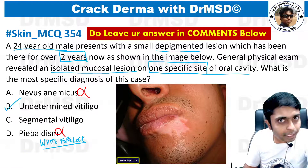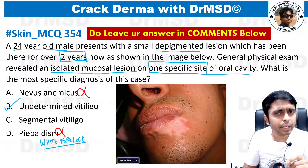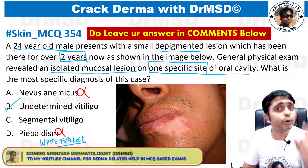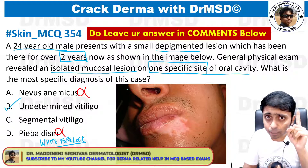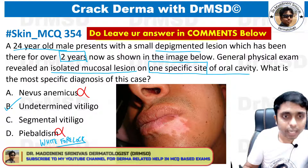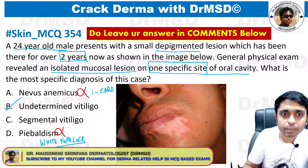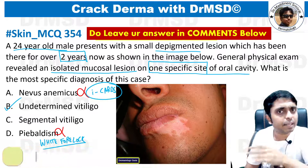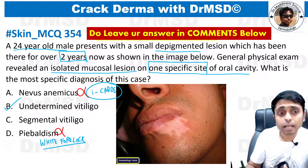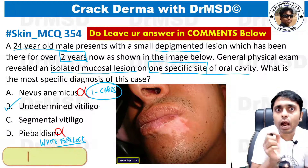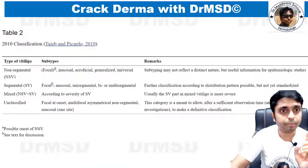Nevus anemicus and nevus depigmentosus have been discussed in detail in another video — check the link in the cards above or at the end of the video. Now let us see why undetermined vitiligo is the answer in this question.